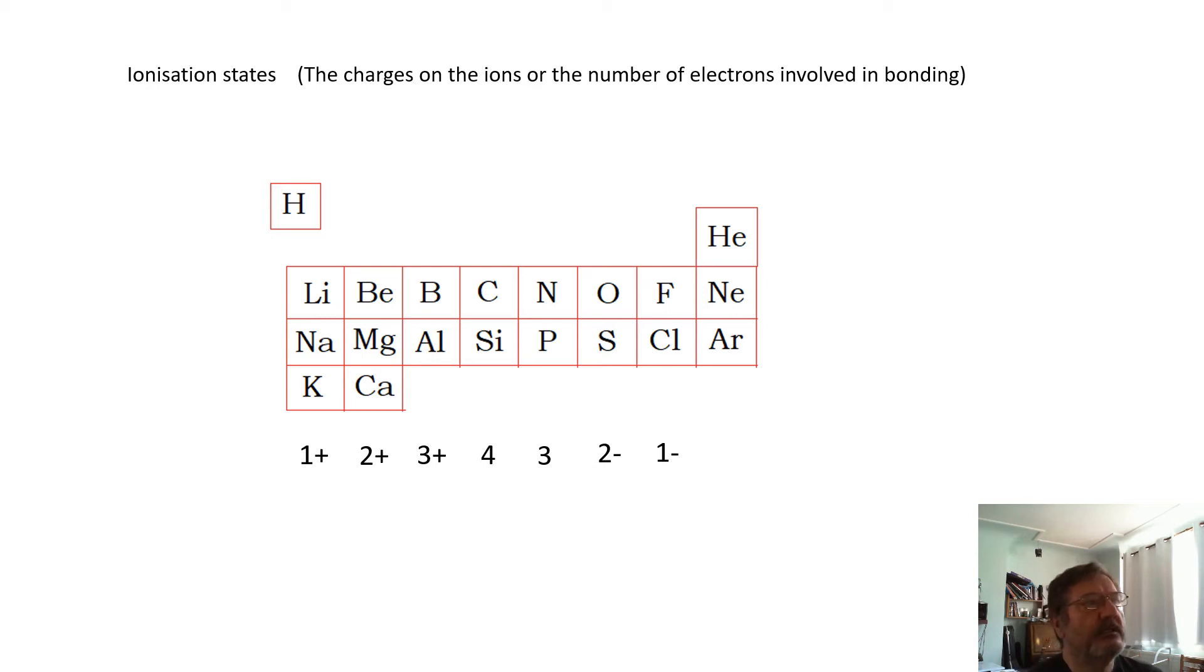Ionization states. Now, ionization states are: if an element forms an ionic compound, then how many electrons does it gain or lose? Or if it's a covalent compound, then how many of its electrons are involved in bonding? Now, ionic compounds—lithium, sodium, potassium—they would really want to get rid of an electron.